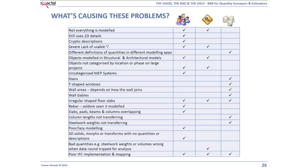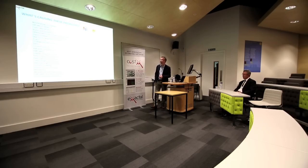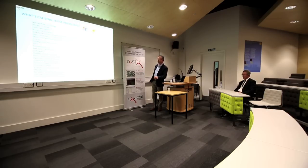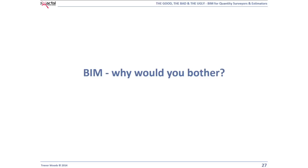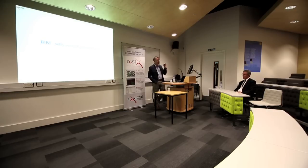Most of the issues are with people; some are with process and some with software. The software issues are improving — things that were problems have already changed or will change. Most issues are fixable. It just needs QSs to get involved and start talking to designers. The traditional approach has architects throwing plans over the wall to the structural engineer, then services engineer, then the QS at the end of the chain — we cost the completed design instead of helping the architect design to cost.